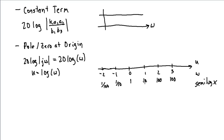A decade above ten is one hundred. A decade above two is two hundred. A decade above two hundred is two thousand, and so on. On semi-log paper, the horizontal axis won't be labeled in u — you'll pick your starting frequency as some power of ten, like one, ten, or one hundred, depending on the frequency range you want to graph over.